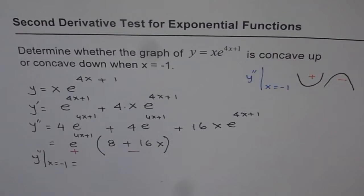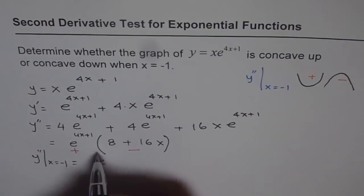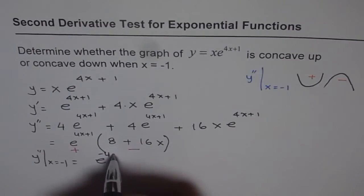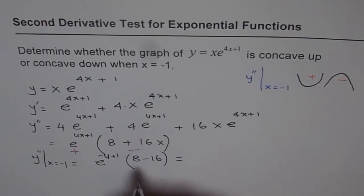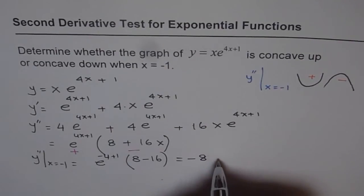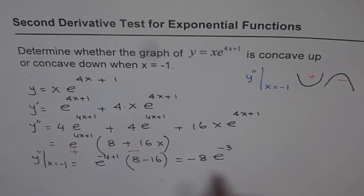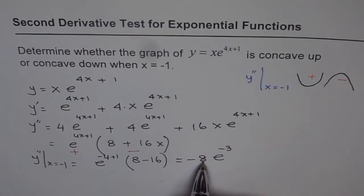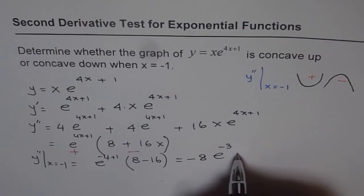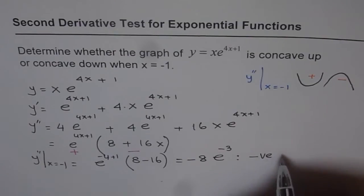We don't even need to compute the exact value — just the sign. Plugging in x equals minus 1, we get e to the power of minus 4 plus 1 times 8 minus 16, which equals e to the power of minus 3 times minus 8, giving minus 8 e to the power of minus 3. The exponential is positive, but the minus 8 makes the whole expression negative.